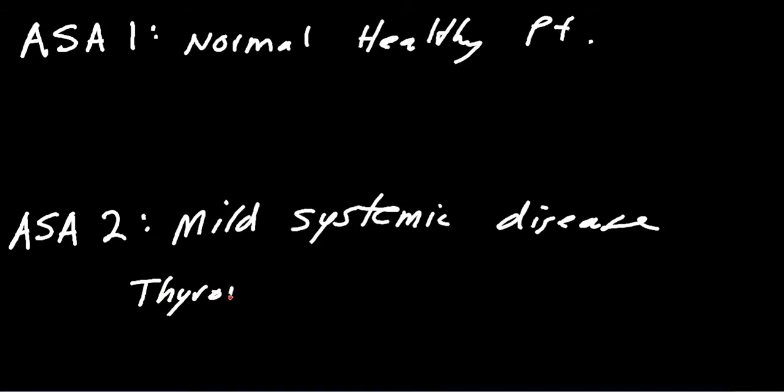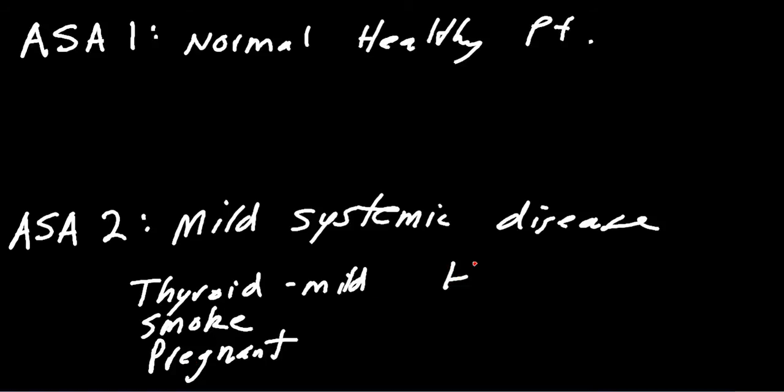What else can we throw into ASA 2? If the patient smokes, they'd be considered an ASA of 2. If they're pregnant, as long as they're not in preeclampsia or HELLP syndrome, just a normal pregnancy would be ASA of 2. High blood pressure, hypertension—